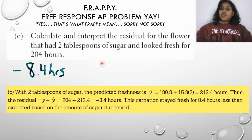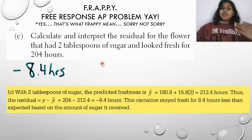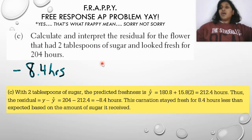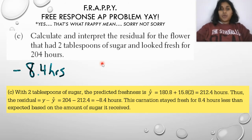That means the carnation stayed fresh for 8.4 hours less than the expected amount given the sugar it received. They actually expected it to last longer — 212.2 hours.